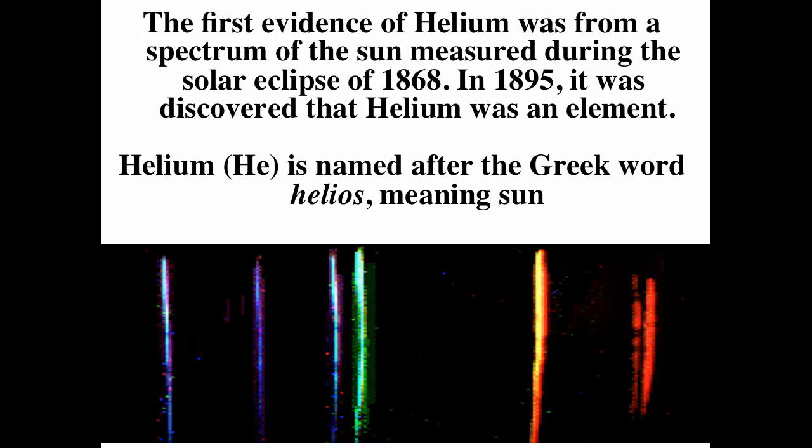It's actually kind of interesting. The first evidence of helium was from a spectrum of the Sun measured during a solar eclipse in 1868. It wasn't until 1895 that helium was discovered to be an element. Helium was discovered in spectroscopy of the Sun before it was discovered on Earth because it was a noble gas that doesn't react with any compounds, so it's very hard to detect.